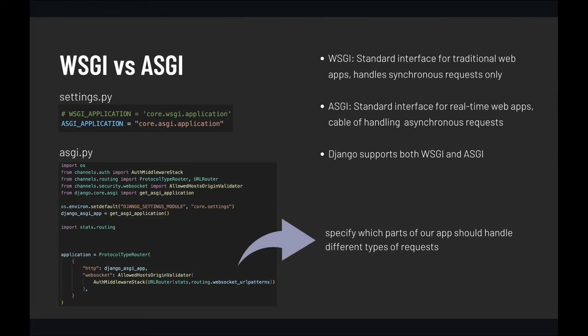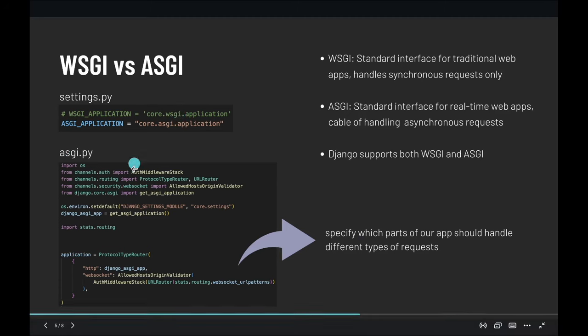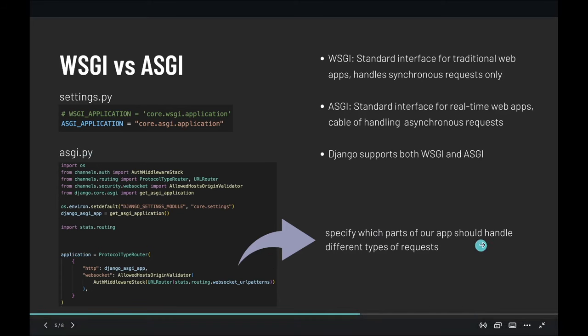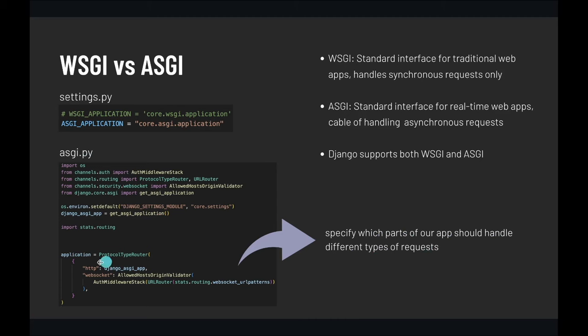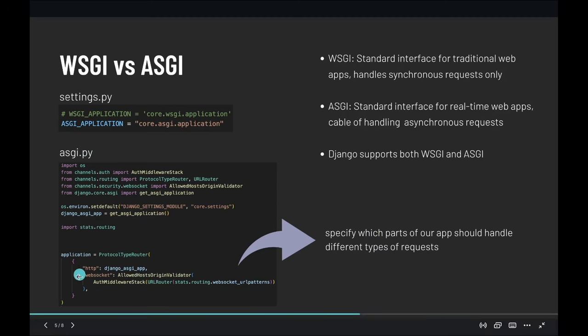Let's talk about WSGI and ASGI — both are Python interfaces for serving web apps. WSGI stands for Web Server Gateway Interface and handles synchronous requests only, while ASGI stands for Asynchronous Server Gateway Interface and handles asynchronous requests. Django supports both. To switch from WSGI to ASGI, which is required for Django Channels, we change it in settings.py and make changes to the ASGI file, specifying which parts of the application handle different request types — HTTP requests and WebSockets.